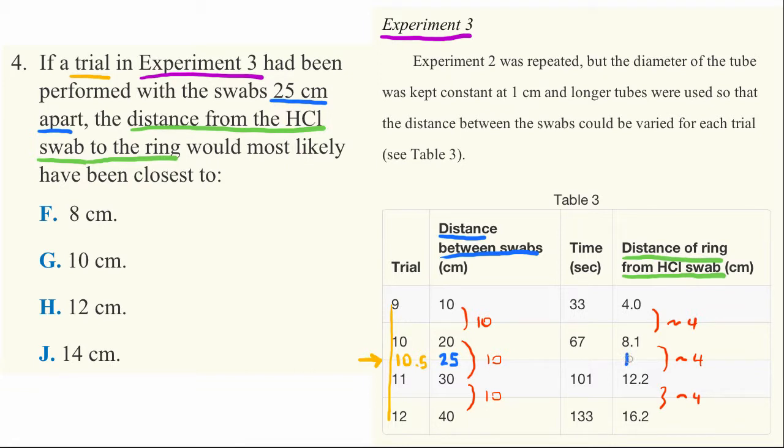And that turns out to be, well, here, let me write this in green, the correct answer that this number, if we injected a new trial should be about 10 cm.